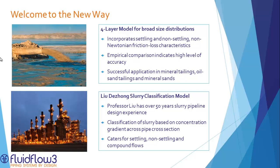We are proud to introduce two new modeling techniques that take this compound flow into account. The four layer model classifies the slurry into four components based on particle size, with each component possessing different friction loss characteristics. Empirical comparison indicates a high level of accuracy, especially for sands, tailings, and paste systems.